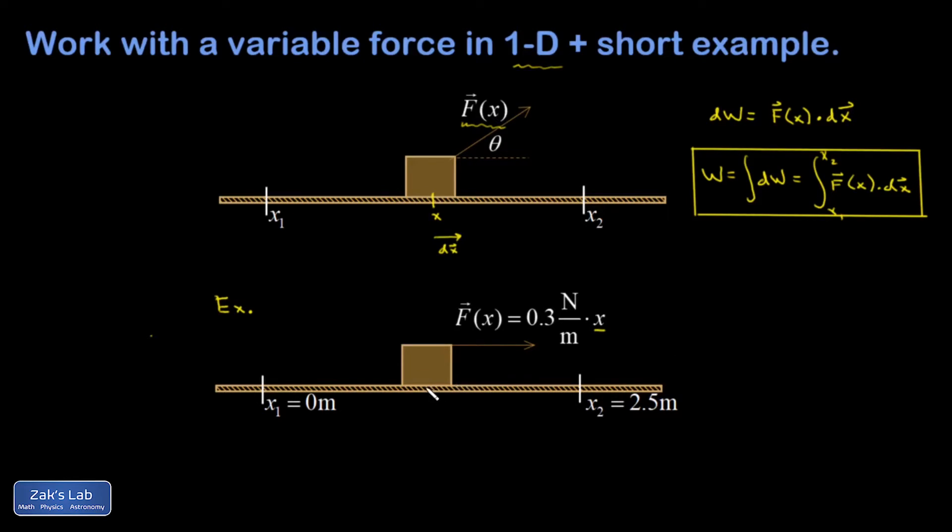So I want to look at some general location along this path that I call x, and at that point F is equal to this value, 0.3 newtons per meter times x. And I'm going to have a little displacement to the right that gives me a little contribution to work. The little displacement is called dx. So let's write down our work integral.